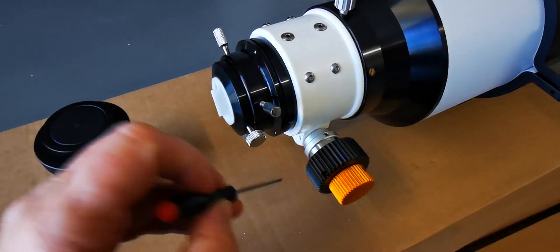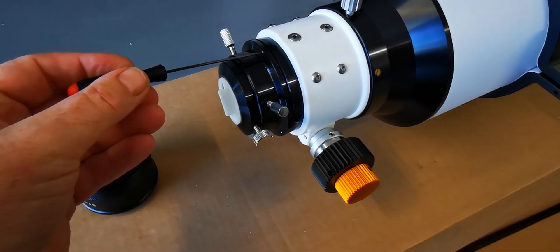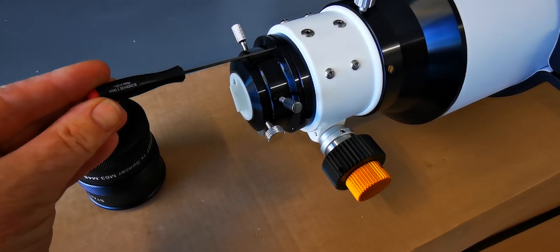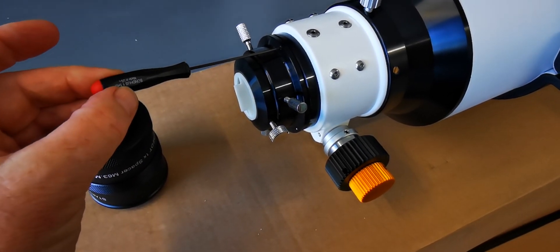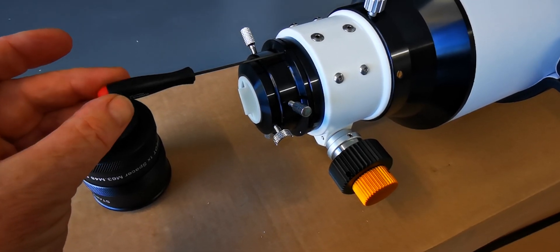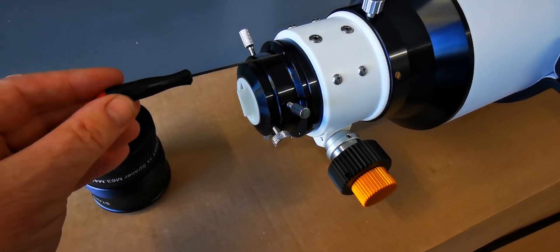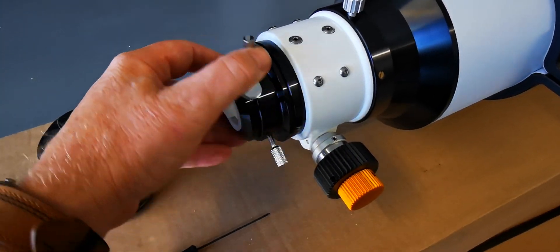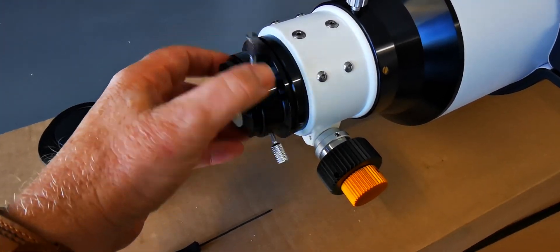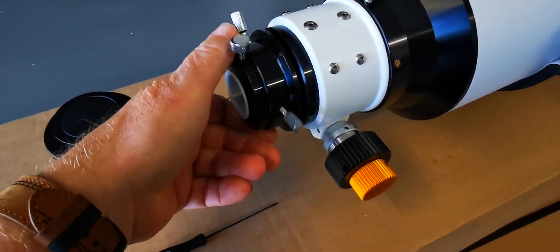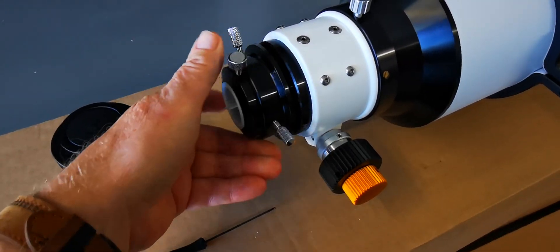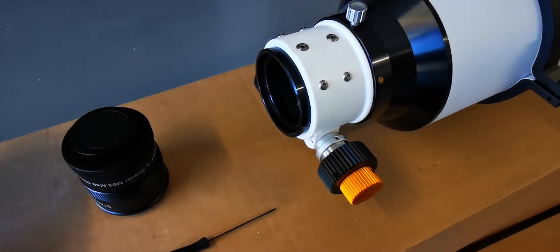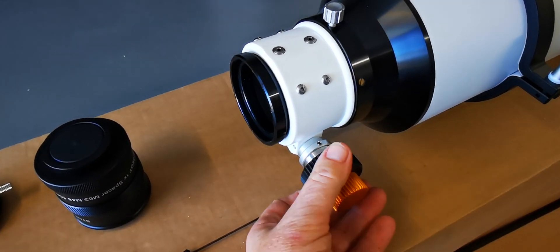I'm using a 1.5 millimeter hex key. There's three of these grub screws around the outside, so you just need to loosen those off and unscrew. We'll put that one down and just move the focuser around.